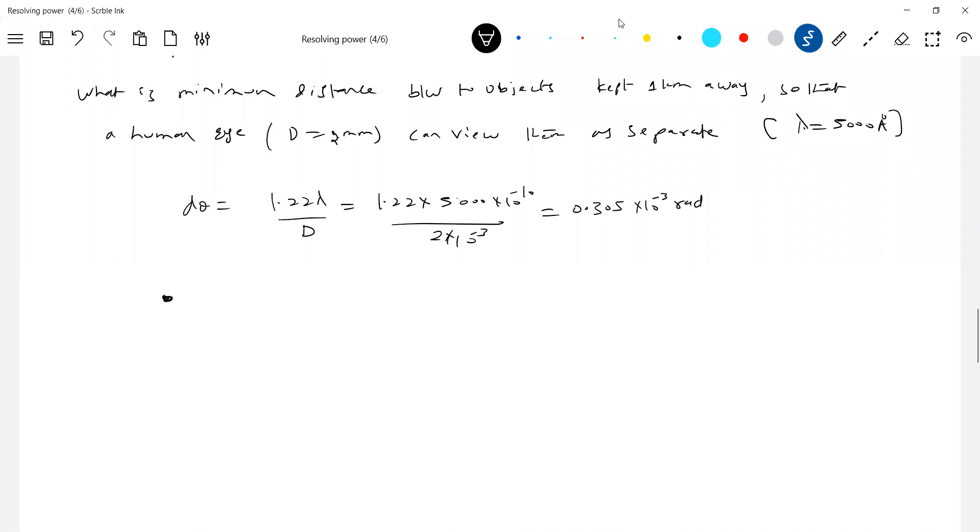He's asking what is that minimum distance. To avoid confusion, I'll use symbols. I'll write y for the separation and x for the viewing distance. This is the angle theta in the human eye.